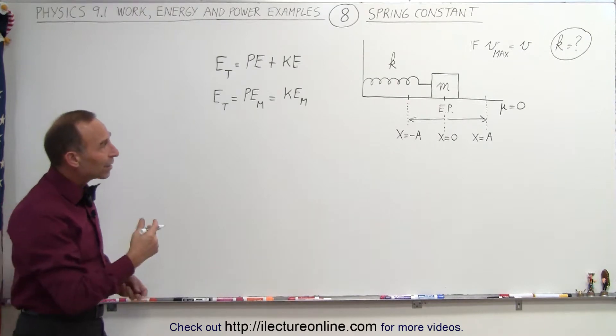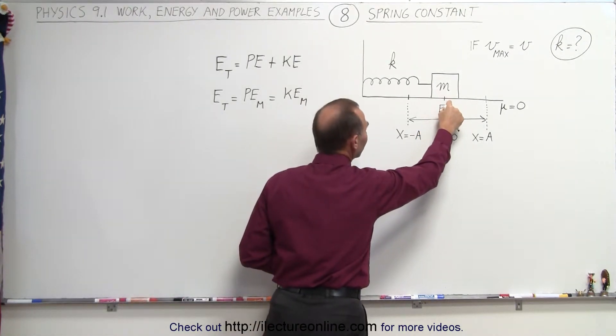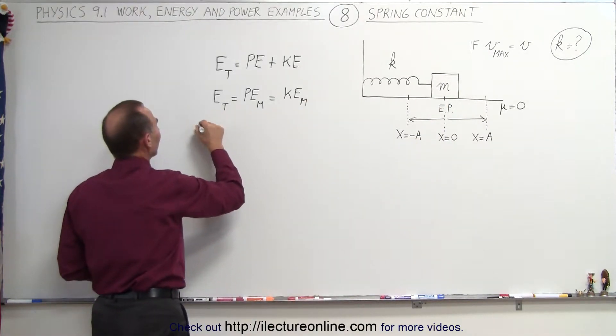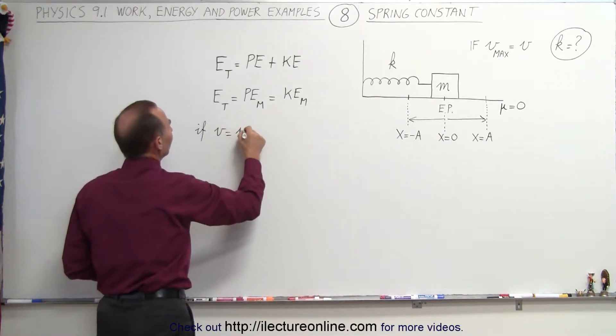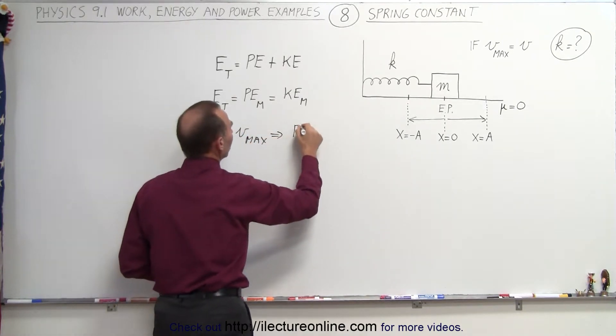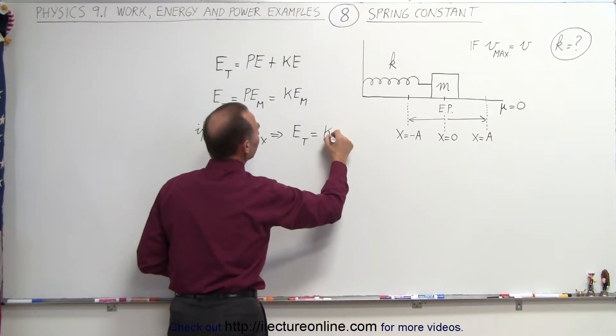Since maximum velocity is reached right here when we have the greatest kinetic energy, we can say that if v equals v max, then we know that the total energy is equal to simply the kinetic energy, so it would be kinetic energy max.